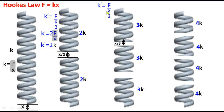The 3 is the denominator's denominator. So it becomes numerator. k' is equal to 3F divided by x. And what is this F by x? This is k. So k' is equal to 3k. So here we are.